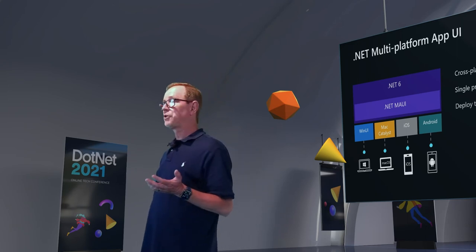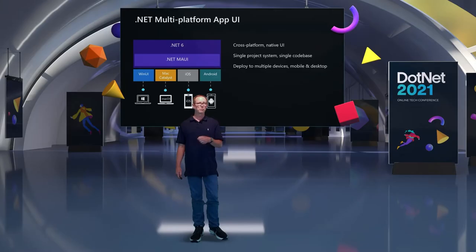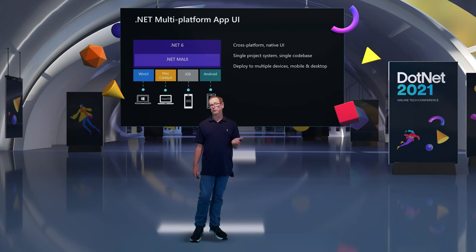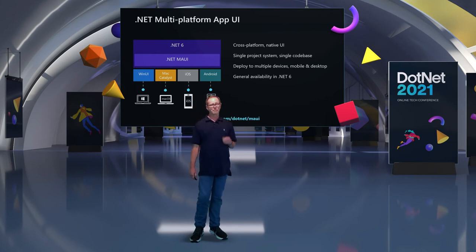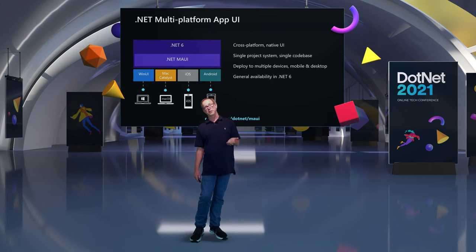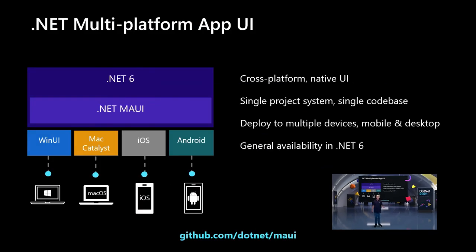You right-click in your application and say deploy to iOS, Android, Windows, or Mac, and it produces the executable for those platforms. This will be available in .NET 6. The first time ever you can build a single application, write once, run everywhere in .NET. You might ask if Linux support is coming — we barely have time to ship these four platforms in .NET 6. If you want Linux, let us know and we'll consider it.